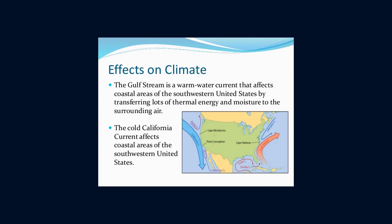The effect of ocean currents on rainfall is specially felt in coastal areas that have onshore winds. Onshore winds are those winds which blow from the sea. When these winds blow over a warm ocean current, they pick up water vapor and bring more rain to the coastal regions. That is why westerlies bring plenty of rain to western Europe throughout the year. Winds that blow over cold ocean currents pick up very little water vapor and so cause little or no rainfall.